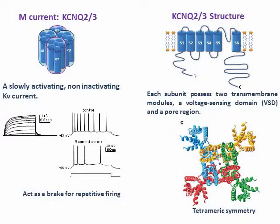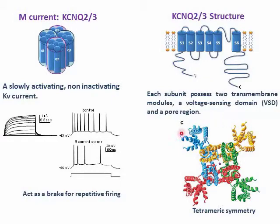The M-current has a profound effect on neuronal excitability, as it acts as a brake for repetitive firing. In humans, mutations in KCNQ2 and KCNQ3 are associated with benign and other forms of epilepsy, or with severe epileptic encephalopathy. Like in all KV channels, KCNQ2 and KCNQ3 subunits comprise two transmembrane modules: the voltage sensor domain and a pore region. The four subunits assemble into a tetramer.